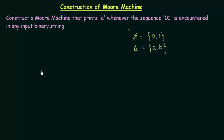Just as we started for Mealy machine, we will start for Moore machine also — by first designing the DFA for this and then we will try to convert it to a Moore machine. We should design a DFA that will accept all binary strings that end with 01.